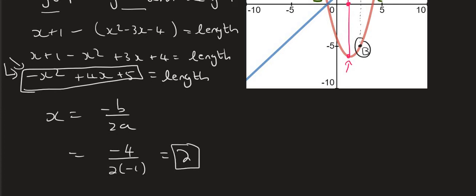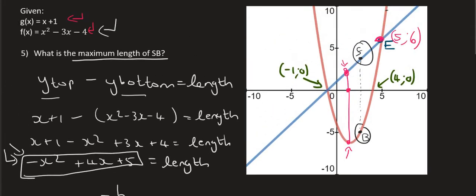So what does that mean? It means that when x is 2, that is where the maximum length would be. So that's somewhere over here. So x is 2 somewhere over there.